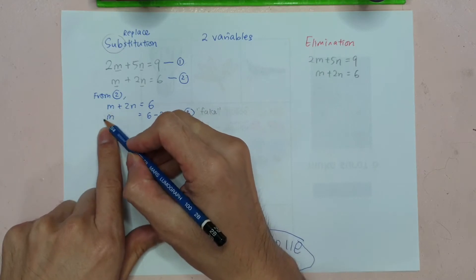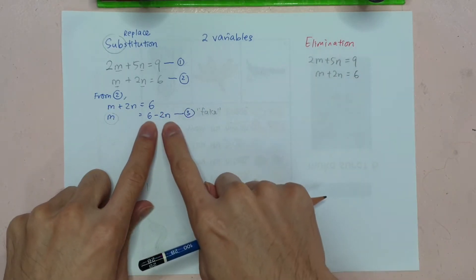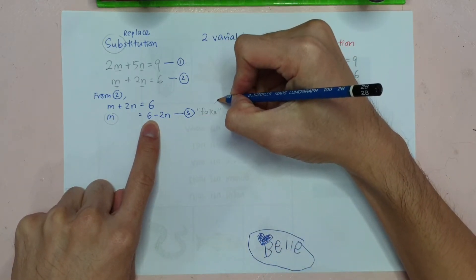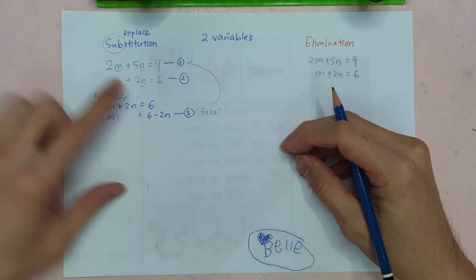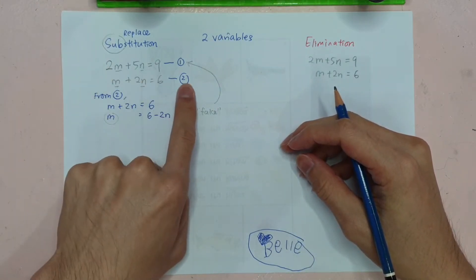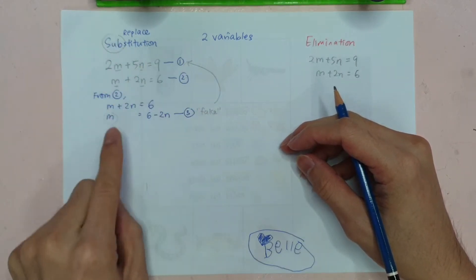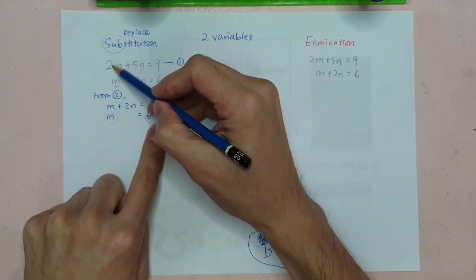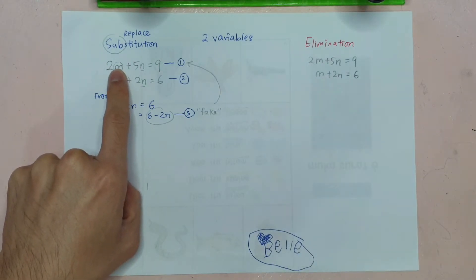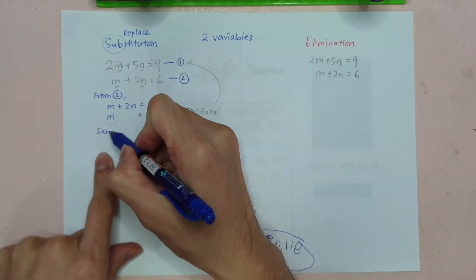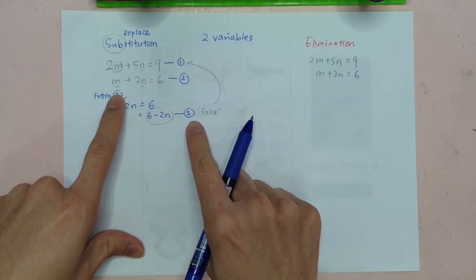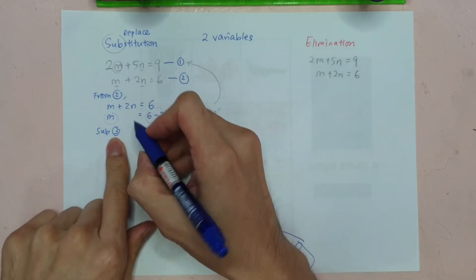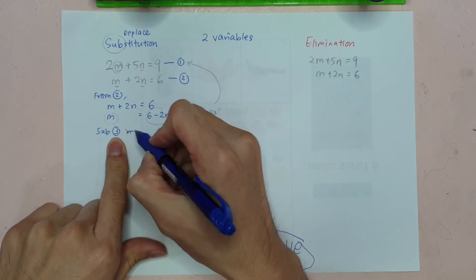I've got this fake M answer, and I'm going to replace it into equation number 1. That's why I say it's like the two equations helping each other. I start with number 2, rearrange into an M expression, then take that M answer and substitute it into equation number 1.